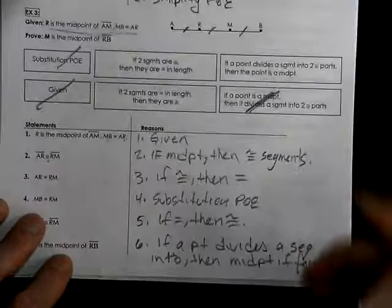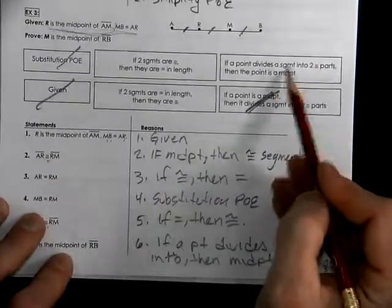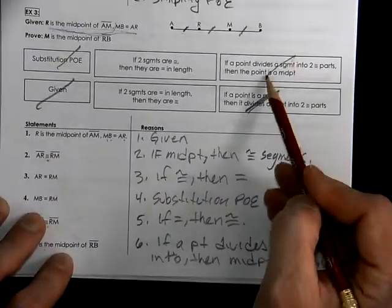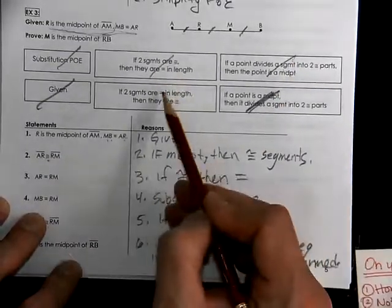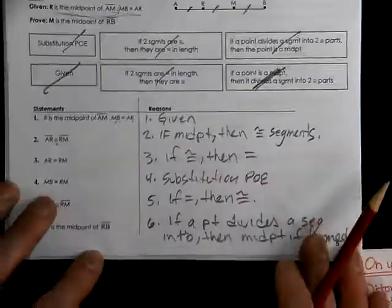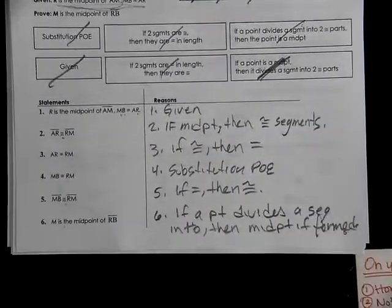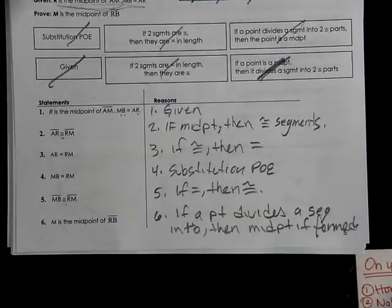That's what the last step is about — if a point divides a segment into two congruent parts, then a midpoint is formed. We've used each box throughout the proof. Good job — that's a big one!